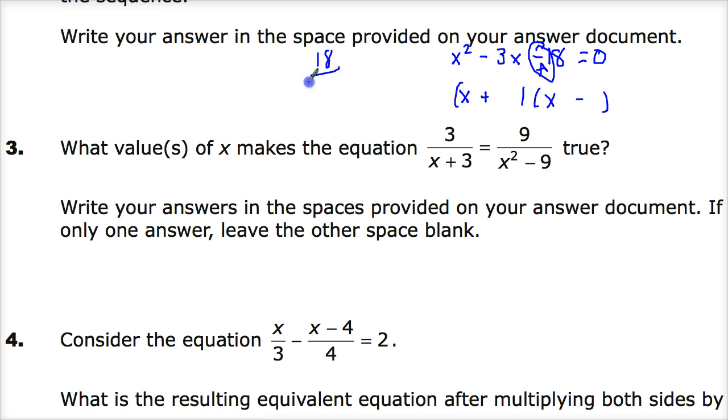So 1 and 18, 2 and 9, 3 and 6. Well, here's my set. And I could either do 3 minus 6, or I could do 6 minus 3. This gives me positive 3, this gives me negative 3. I want negative 3, so I'm going to choose this set. So the 3 goes after the plus, and the 6 goes after the minus.